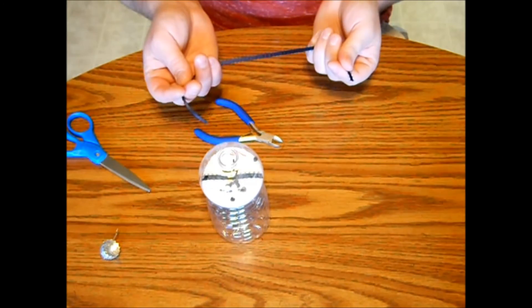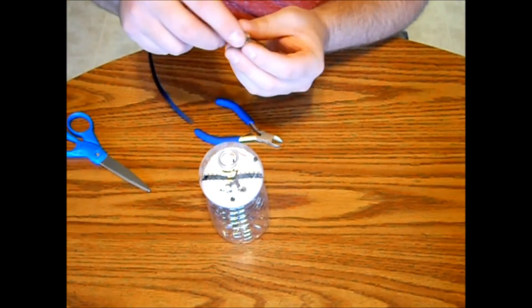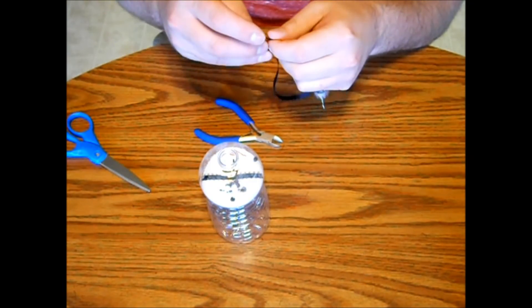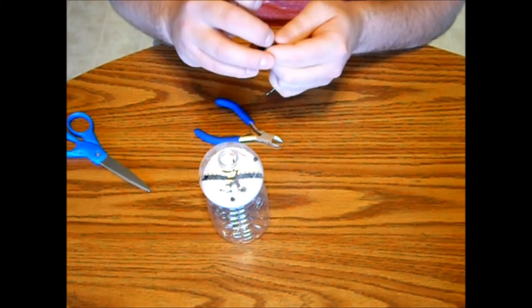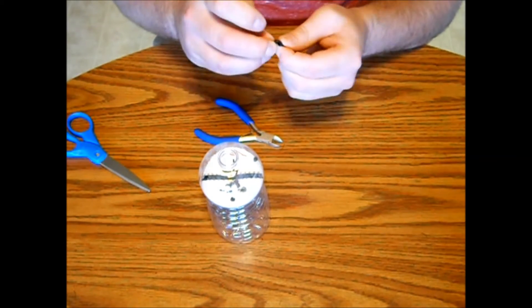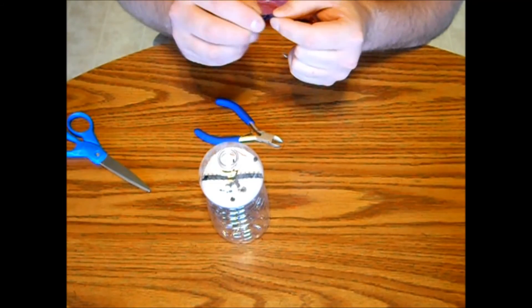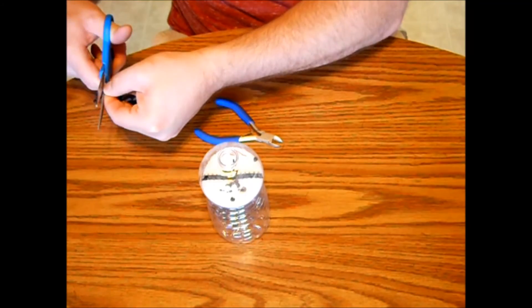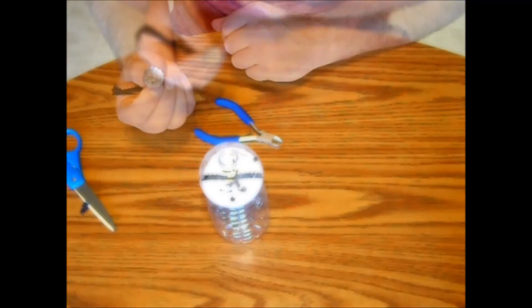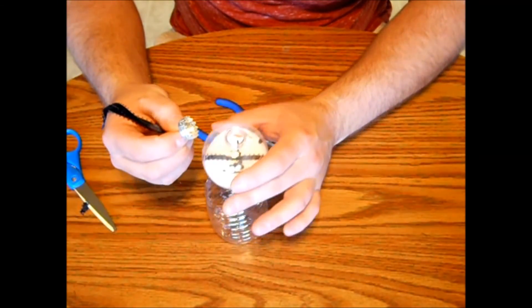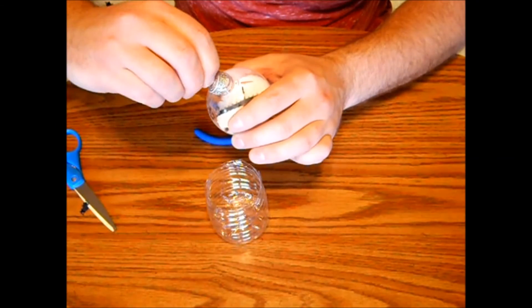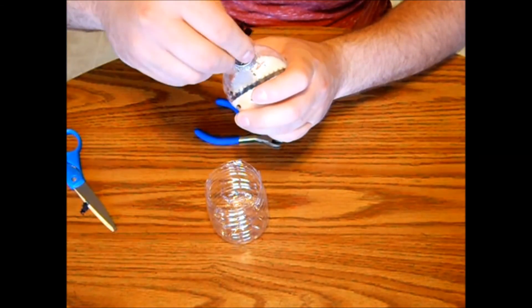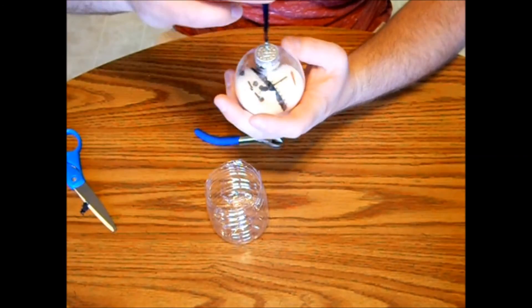Next, you want to grab your twelve inch piece of ribbon. And I'm just going to run it through the top here. And then just tie a knot. And I just like to clip off any excess about a quarter inch from the knot. Now carefully, put your lid back on. Just like that.